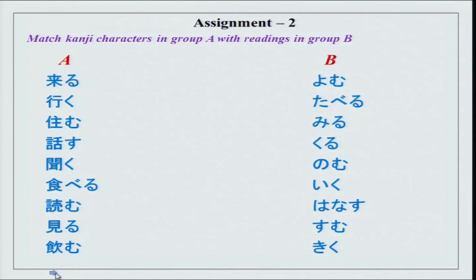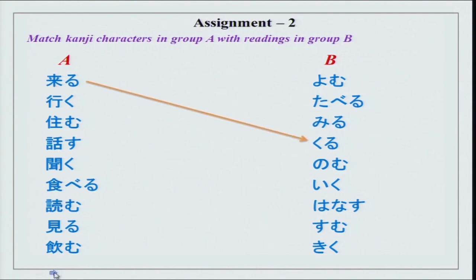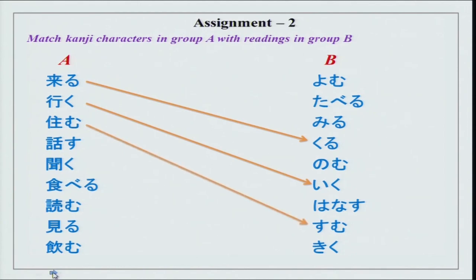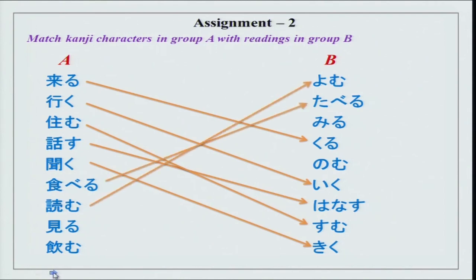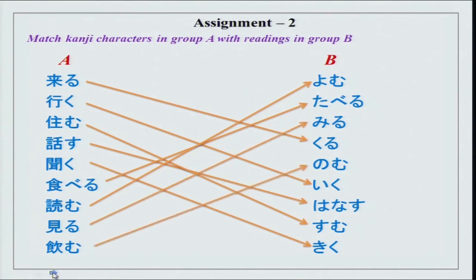Then we have kanji characters in group A and some hiragana in group B. Group A is verbs. The kanji is here, and as we have hiragana after the verb to show the tense, the hiragana is written here. The first one is kuru, to come. Then iku, sumu which is to live, hanasu which is to talk, kiku, taberu, yomu, miru, nomu. These are your verbs in hiragana.